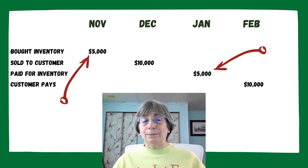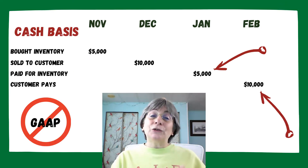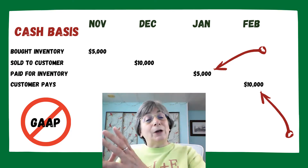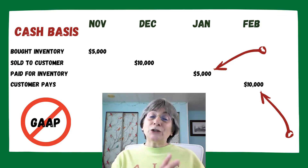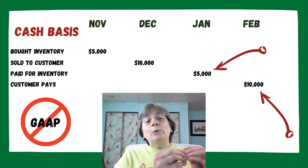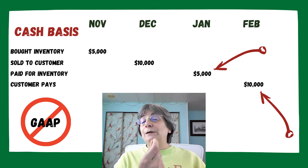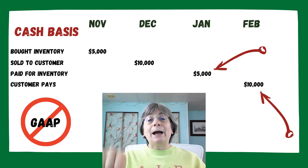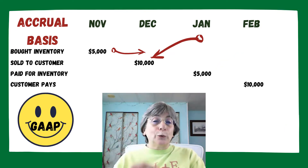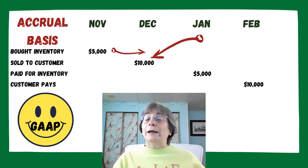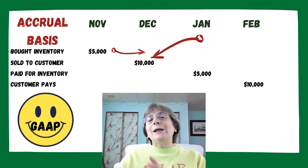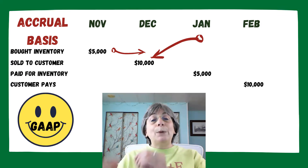Well, it's all about timing. When we're talking about cash basis accounting versus accrual basis accounting, this is where we're going to see our big difference. Under cash basis accounting, we recognize revenue when we receive the cash, and we recognize expenses when we pay out the cash — when we pay that bill. Under accrual based accounting, we recognize our revenue when we earn it, not when we get paid for it. And we recognize our expenses when we incur them, not when we pay them.